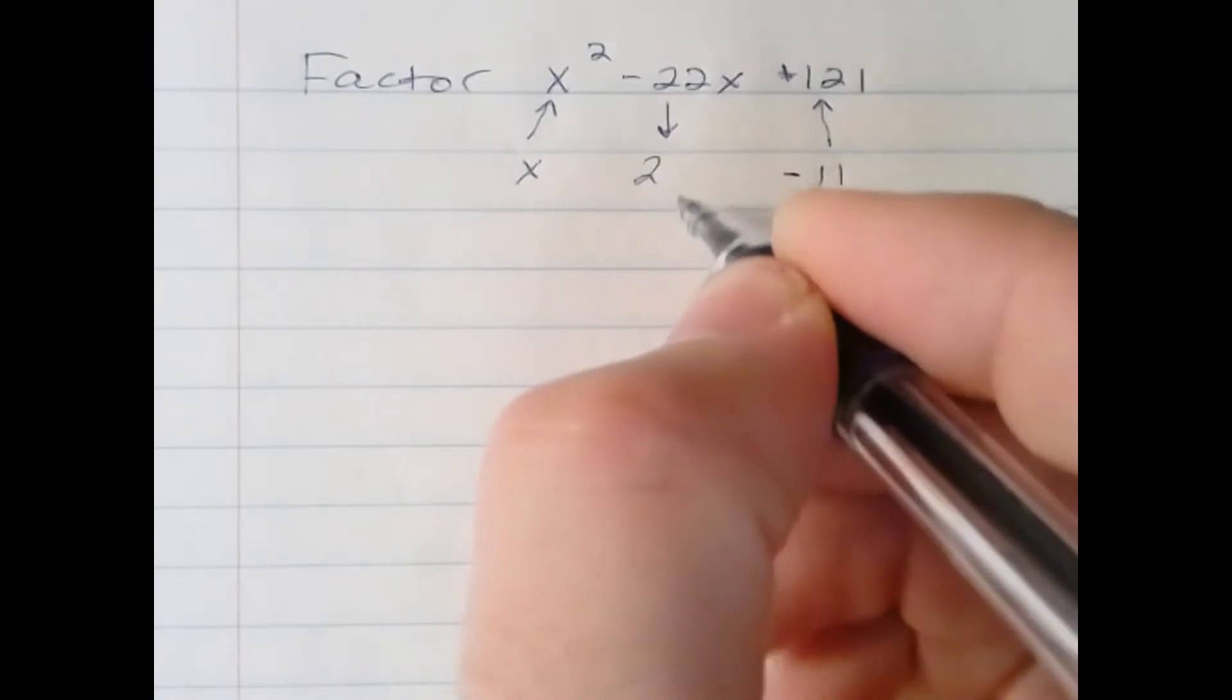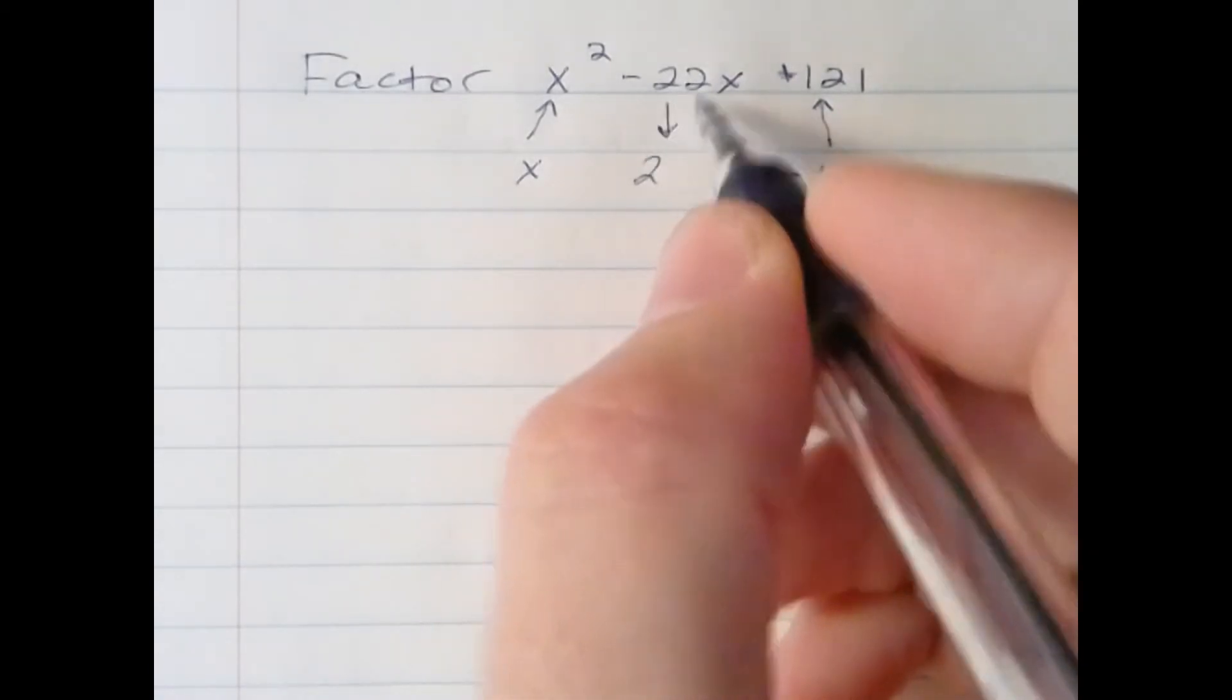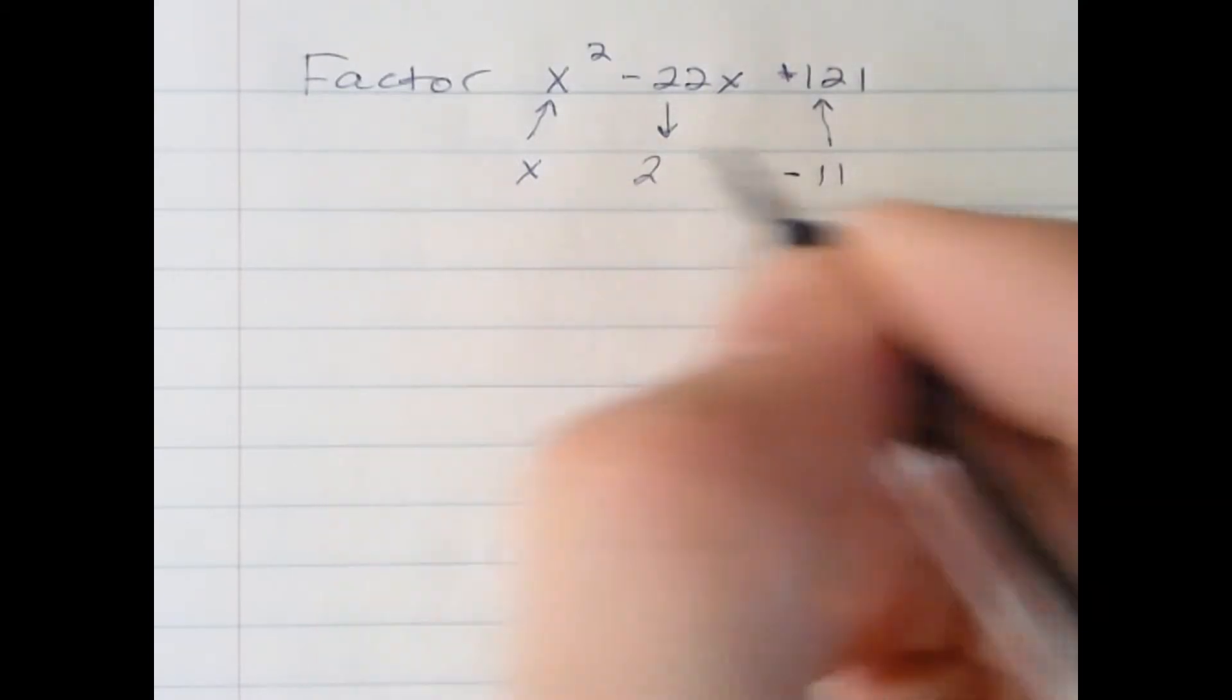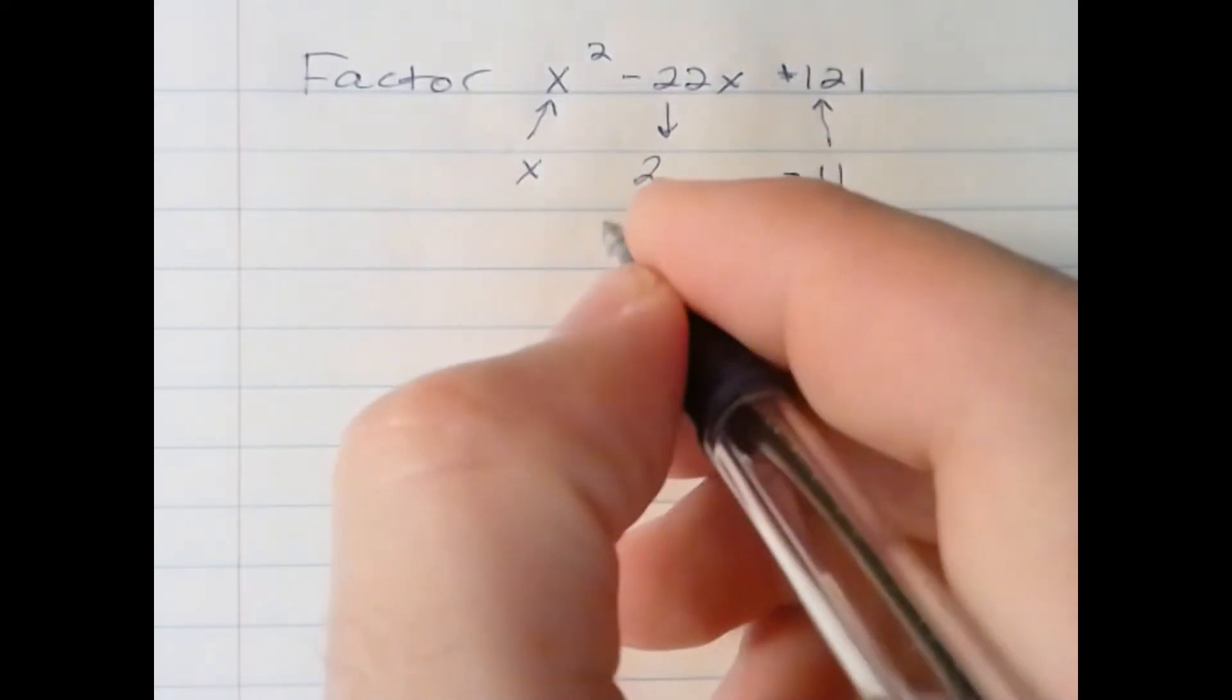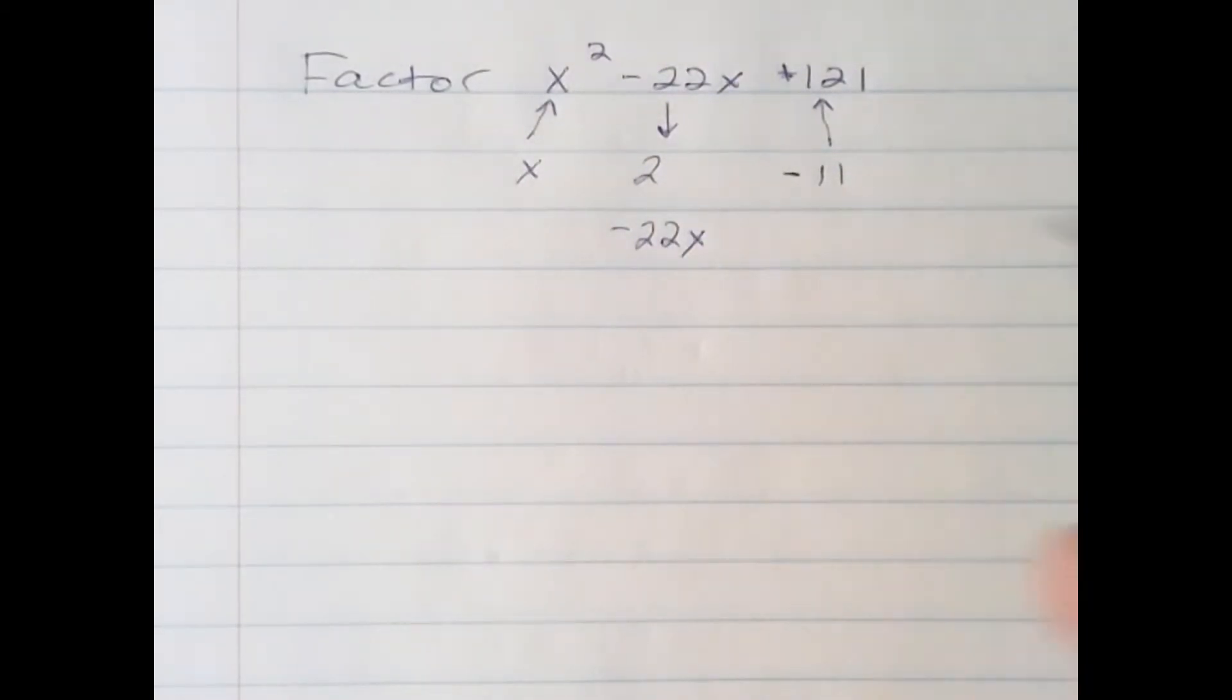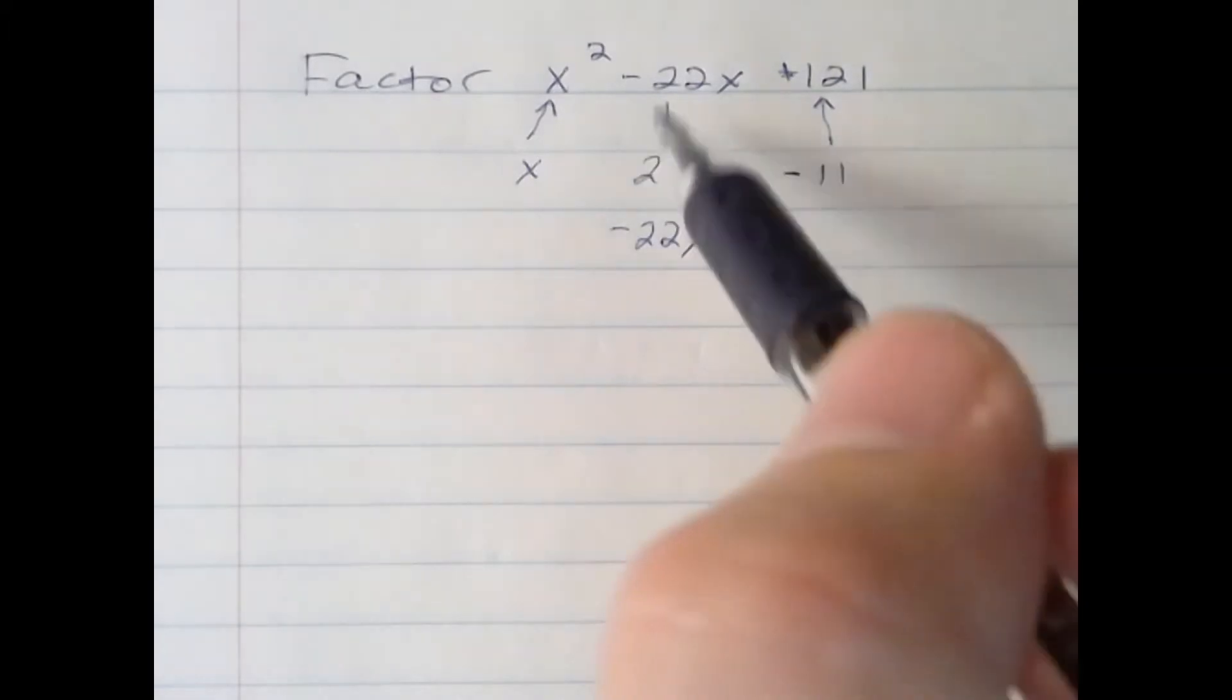we want to make sure this middle term is twice x and negative 11. And if we do 2 times x times negative 11, we do get that negative 22x term, solidifying the fact that it is a perfect square trinomial, in this case a difference.